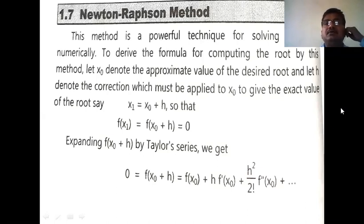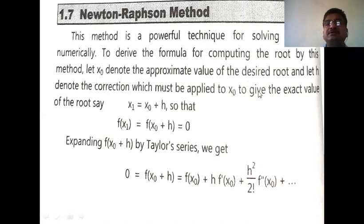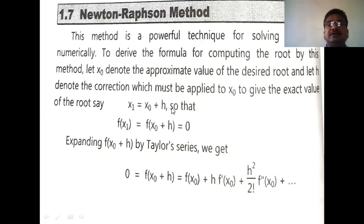We first develop the formula for this method — the Newton-Raphson formula. Suppose f(x) = 0 is the given equation, and let x₀ be its approximate root. Let x₁ be the correct root of the equation. Suppose h is the error or difference between the correct root and the approximate root, so x₁ = x₀ + h.